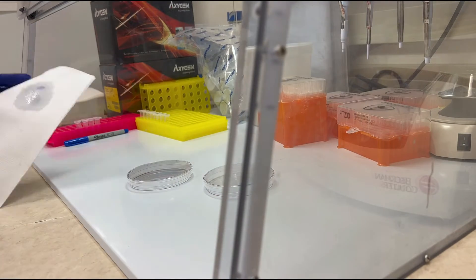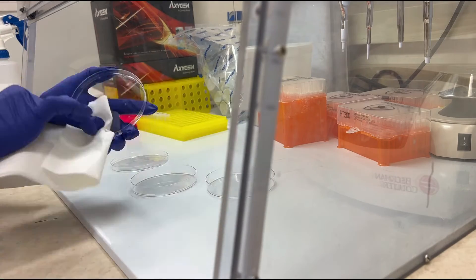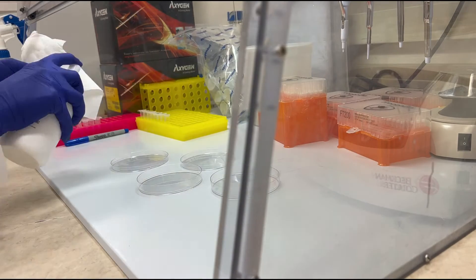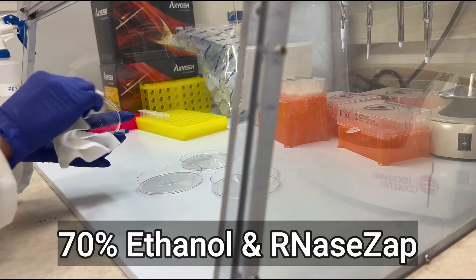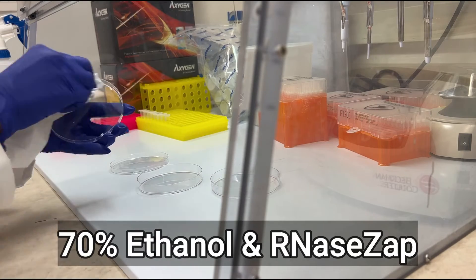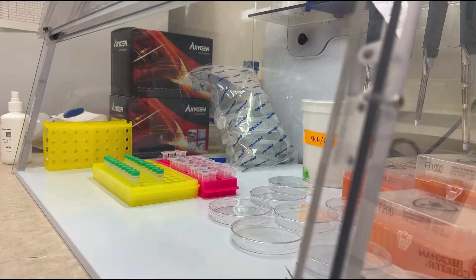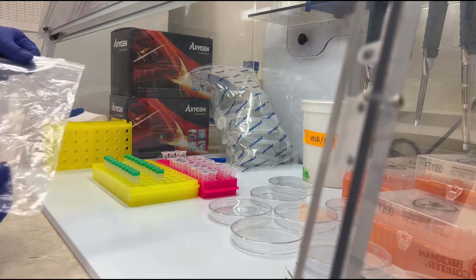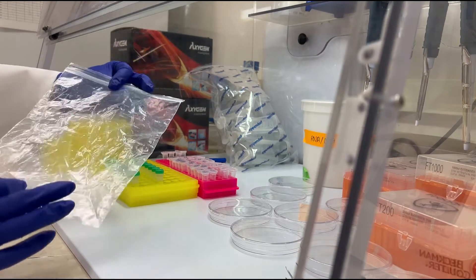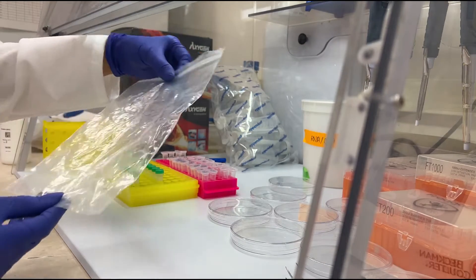Don't forget about your petri dishes or any other surface you want to use for cutting the tissues. Wipe them down with 70% ethanol and RNA zap to maintain a clean workspace for your samples. Lastly, grab a bag for dry ice—this will come in handy during the cutting process.